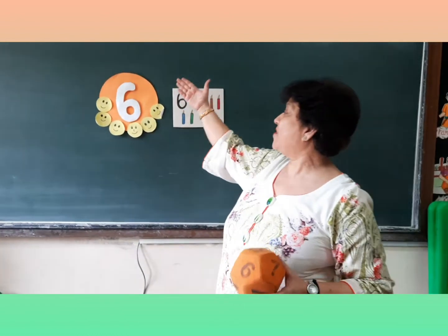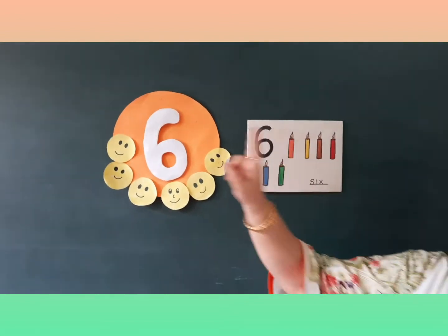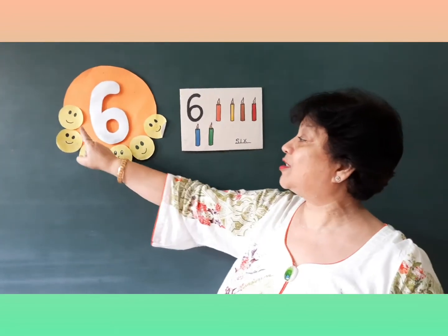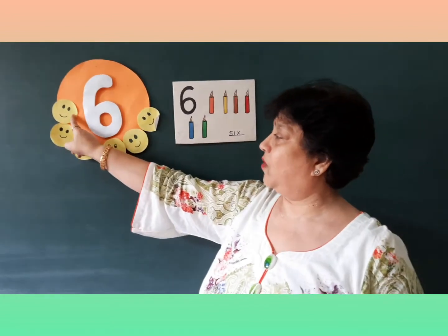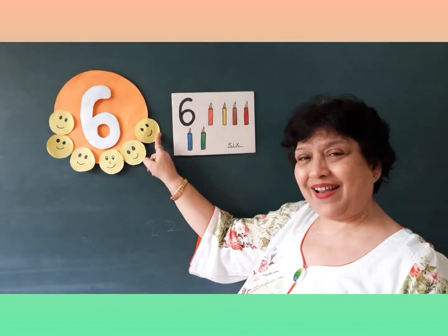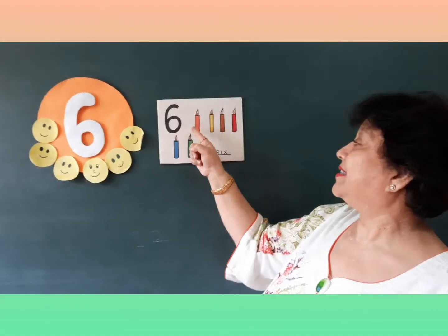Now what are we going to do? What is this, ma'am? It has a ball of numbers. Which number is this? 6. Yes. Today we are going to do writing of number 6. This is number 6. Now count the smileys: 1, 2, 3, 4, 5, 6 smileys. This is also number 6 — 6 candles: 1, 2, 3, 4, 5, 6.